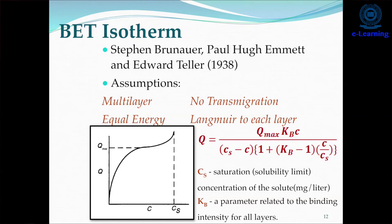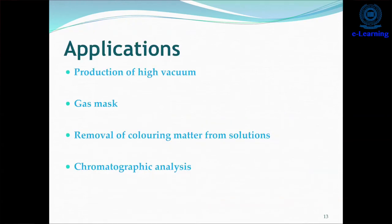The next isotherm is the BET isotherm, given by Stephen Brunauer, Paul Hugh Emmett, and Edward Teller in 1938. These are the assumptions given by BET, along with the empirical formula for the BET isotherm.